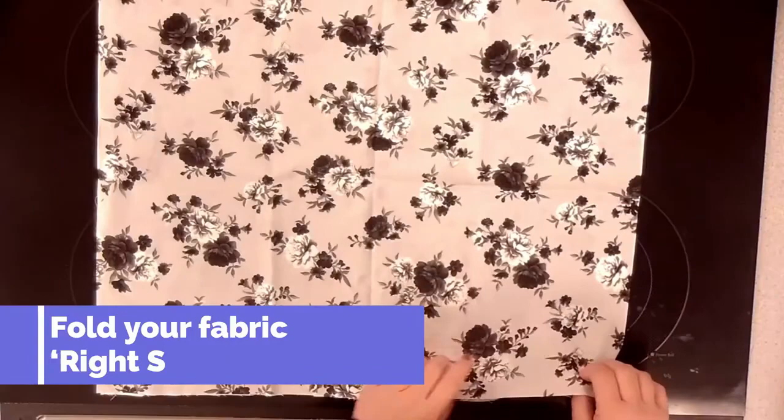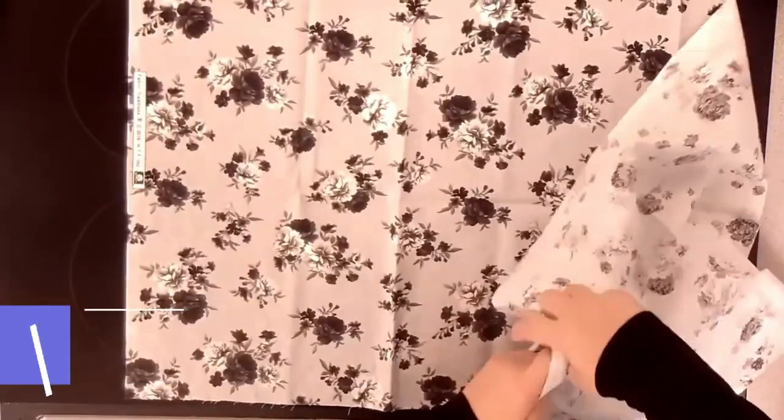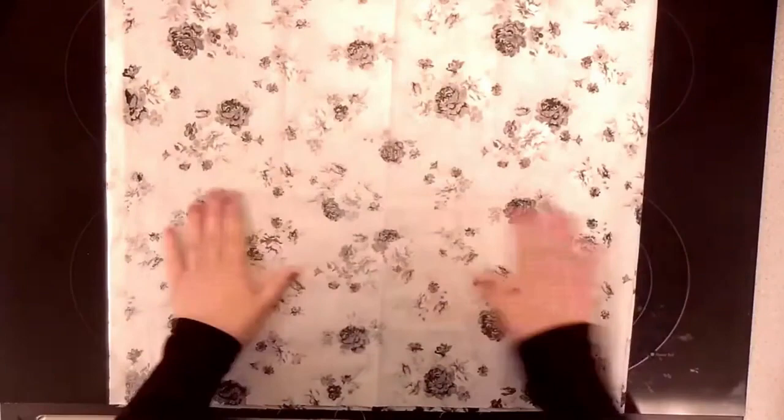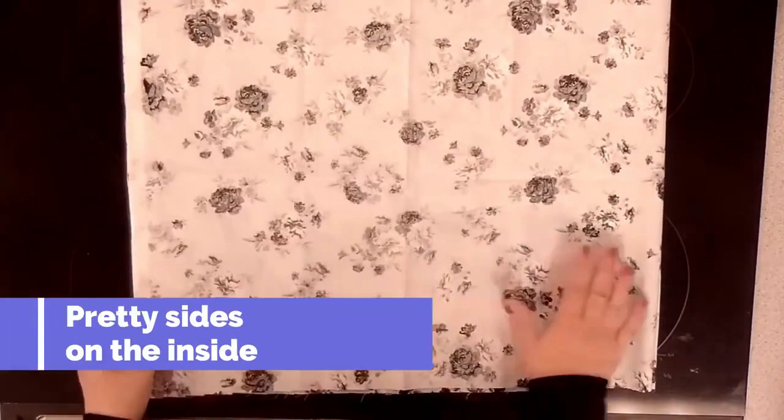You're going to open up your inside piece all the way and then fold it so that the two pretty sides are inside, and if you open up the corner you'll be able to see the two pretty sides.